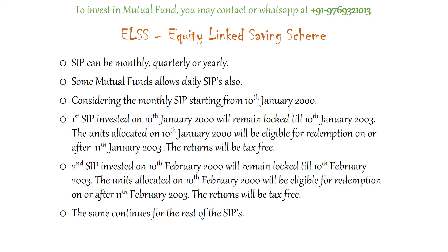SIP can be done in a systematic investment plan format — monthly, quarterly, or yearly. Some mutual funds also allow daily SIPs. Monthly SIP is always advisable compared to quarterly or yearly, because since the market remains volatile in the near term, a monthly SIP helps in averaging. Averaging over time helps SIP deliver more returns compared to quarterly or yearly investment.